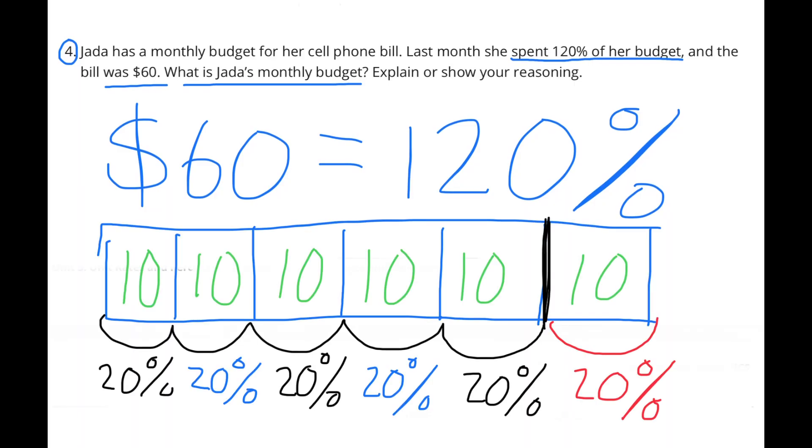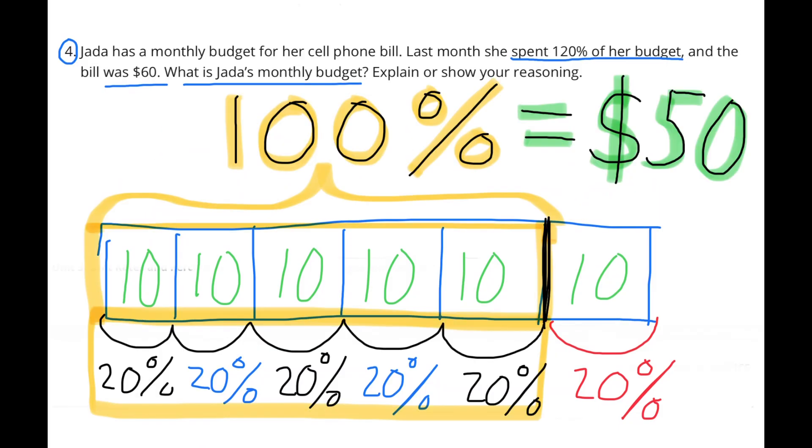Here's a tape diagram that I made that shows 20% sections. So 20% times 5 equals 100%. So the first 5 represent 100%. $60 divided by 6 sections equals $10. So each of the 6 sections is also worth $10, or 20% is $10. The total of the first 5 sections equals $50, or 100% of the phone bill.